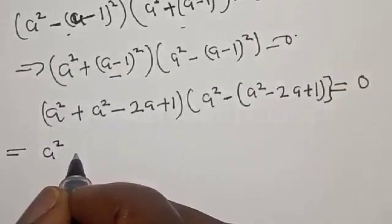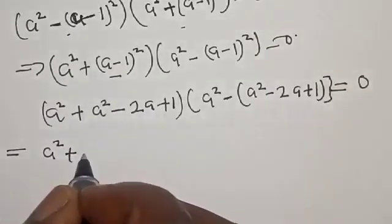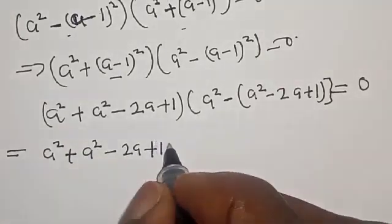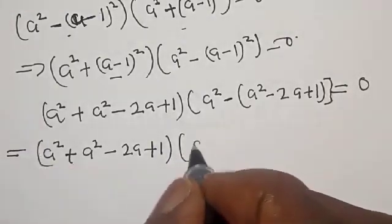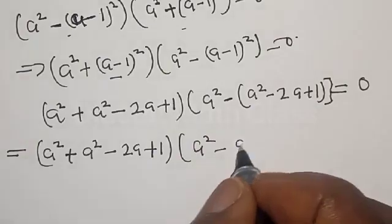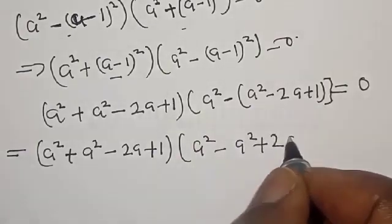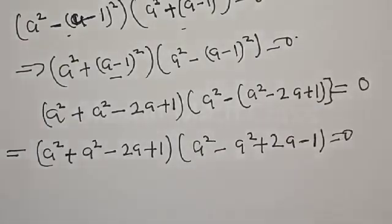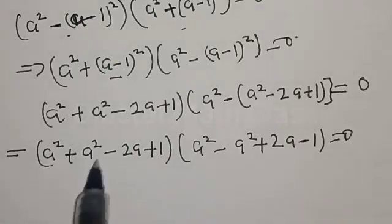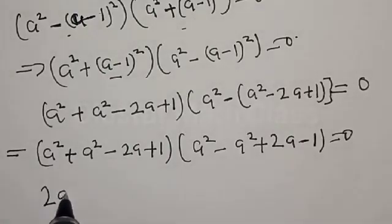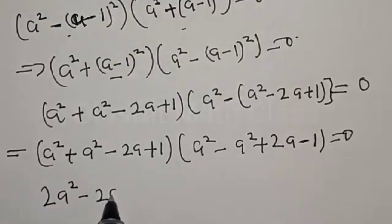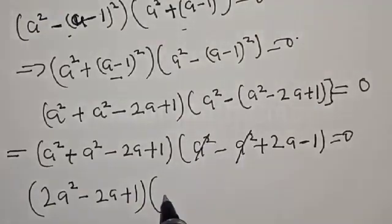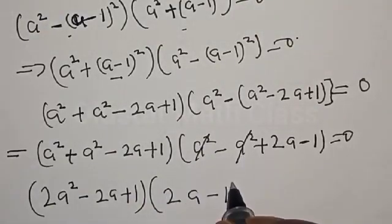Now our equation becomes: a² plus a² minus 2a plus 1, which simplifies to 2a² minus 2a plus 1. And a² minus (a² minus 2a plus 1) gives us 2a minus 1. So we are left with (2a² minus 2a plus 1) times (2a minus 1) equal to zero.